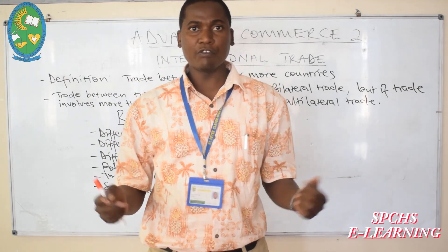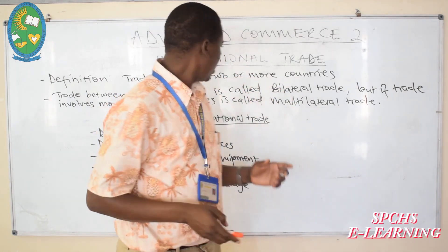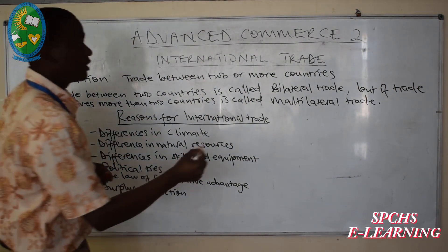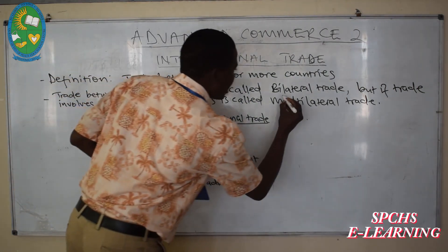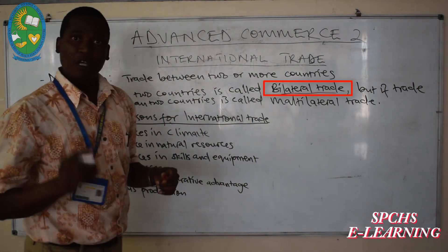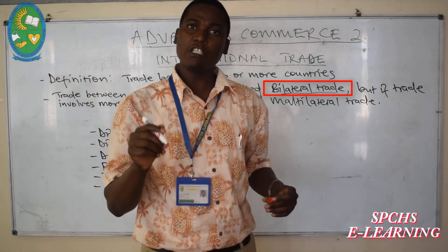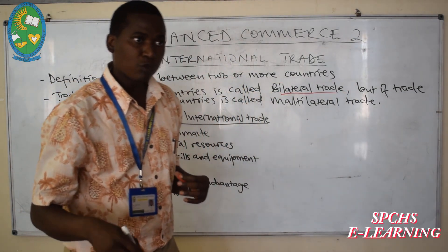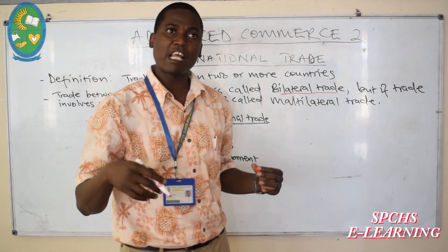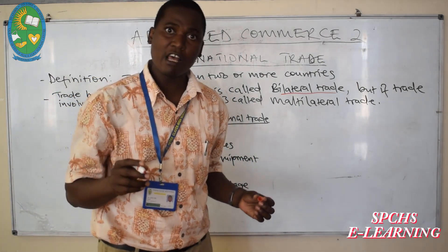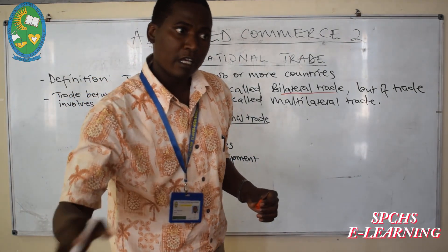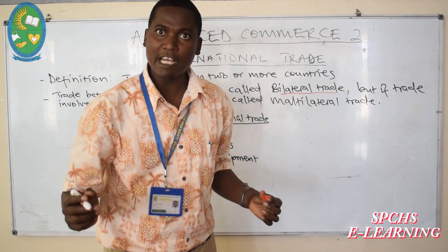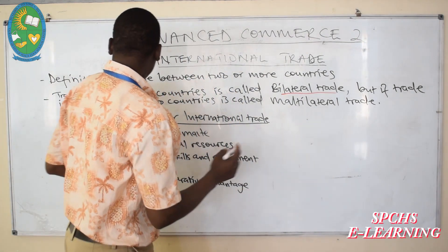If this kind of trade involves only two countries, it is referred to as bilateral trade. But if this trade involves more than two countries, that means many countries are trading — for example, Tanzania is trading with Kenya, with Uganda, with China, and other countries.